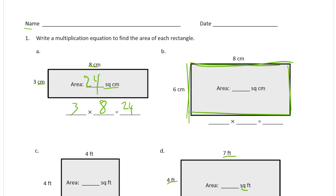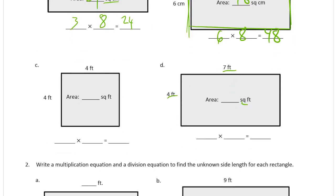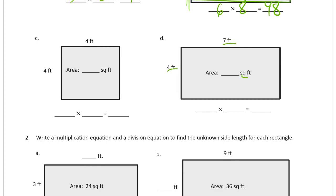So here the area is going to be 6 times 8, which is 48. So it's 48 square centimeters. Here's a square, so this is 4 times 4, which is 16 square feet. This is 4 feet by 7 feet, which is 28 square feet.